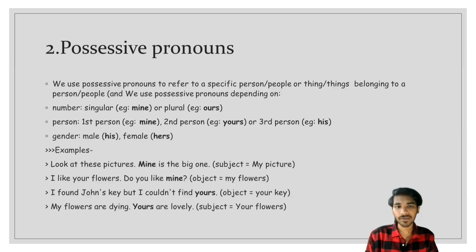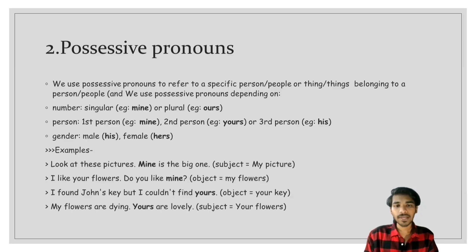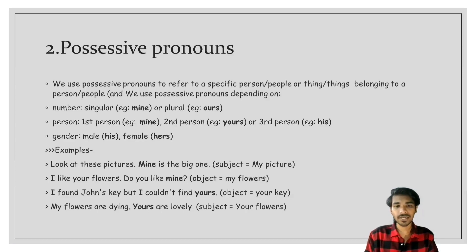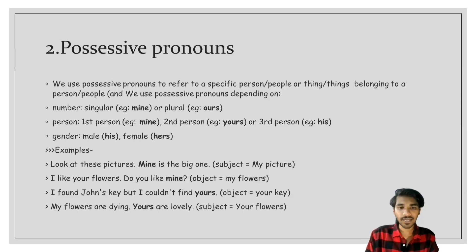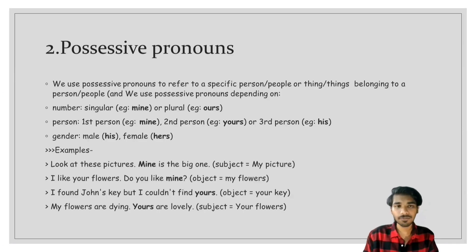Examples of possessive pronouns: 'Look at these pictures — mine is the big one' (here 'mine' refers to my pictures as subject). 'I like your flowers, do you like mine?' (here 'mine' is the object, referring to my flowers). 'I found John's key but I couldn't find yours.' 'My flowers are dying, yours are so lovely' (here 'yours' is the subject, referring to your flowers).